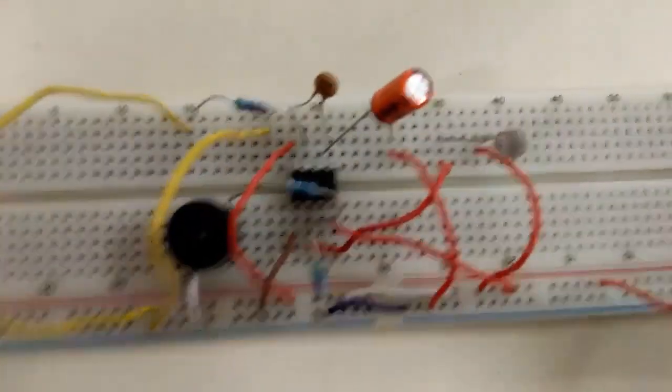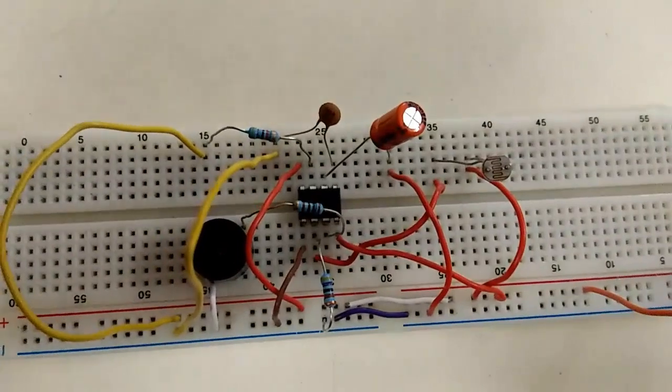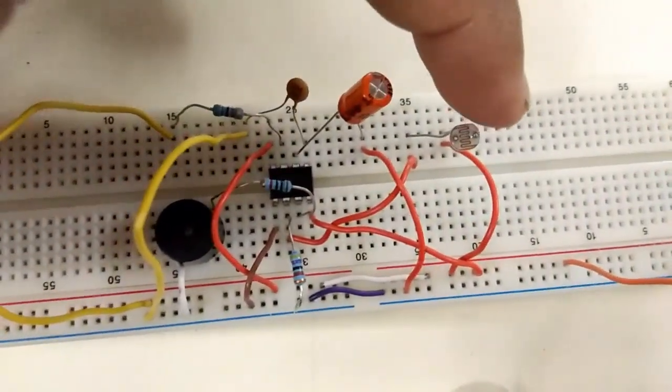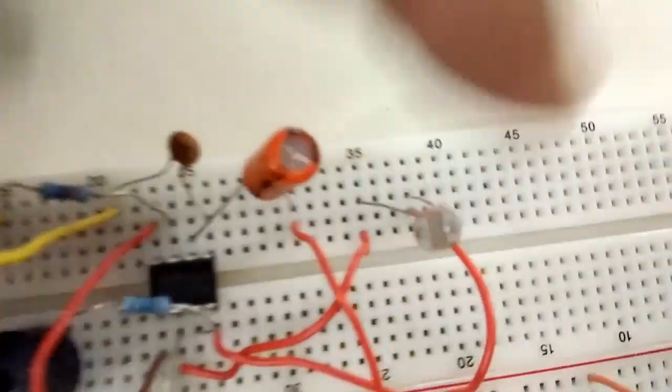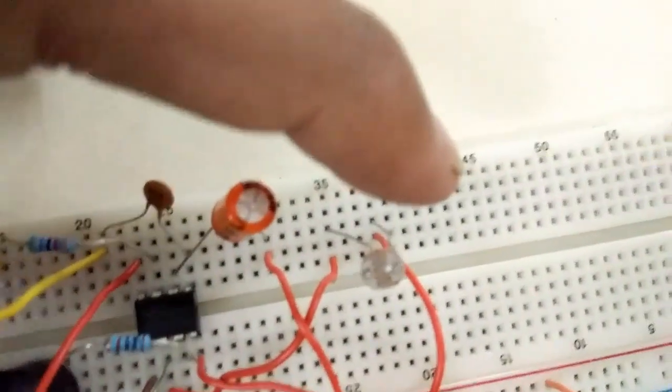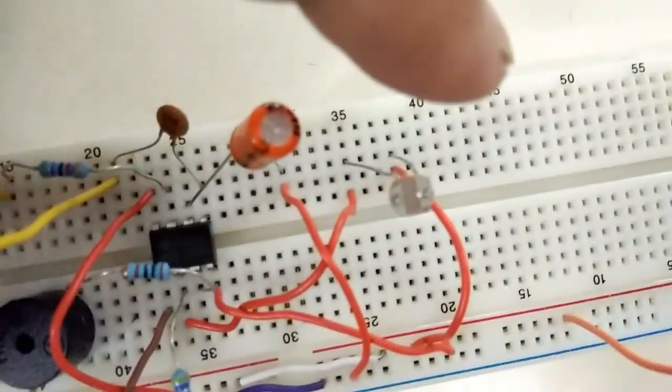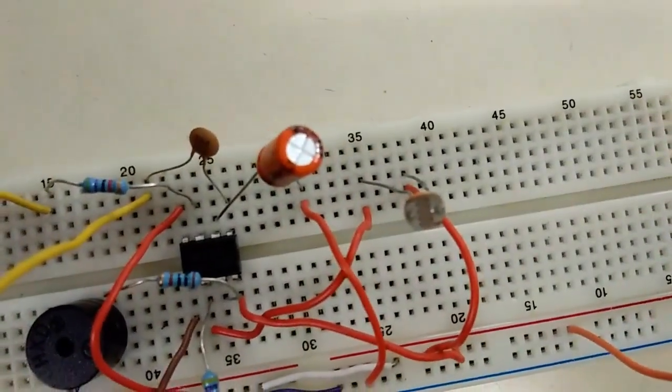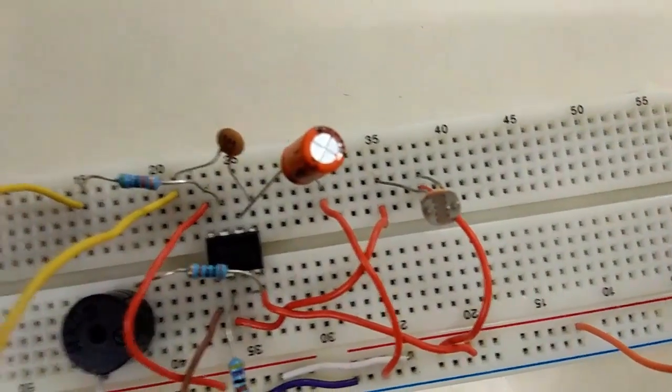This is a simple dark detector or light detector circuit that is based on a 555 timer and LDR. The LDR is a light dependent resistor whose resistance depends upon the quantity of light that falls on it.